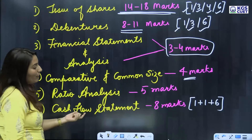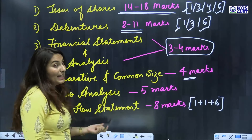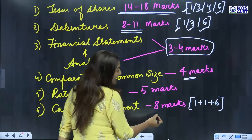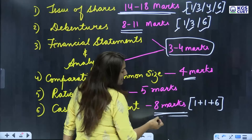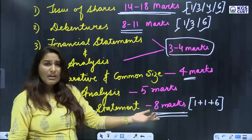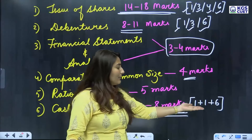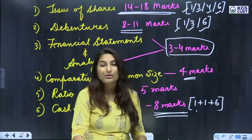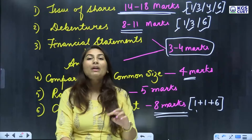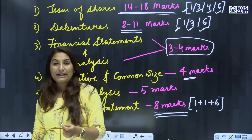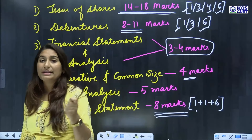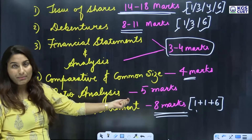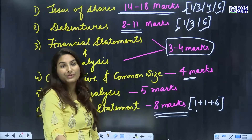From cash flow statements, you will get around 8 questions — 1 mark each for 2 questions and 1 full cash flow statement question. Cash flow from investing activities, operating activities — these can be asked in short 1-mark questions, plus a full cash flow statement question.